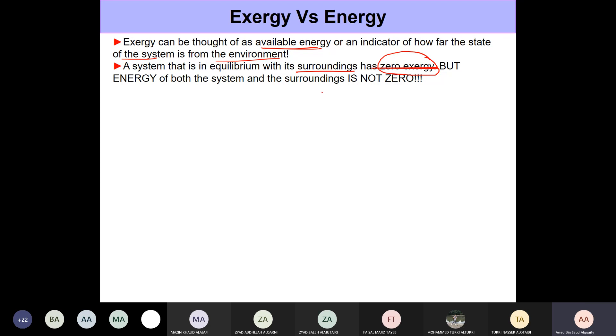When the system is at equilibrium with the surroundings, you call it the dead state and it has zero exergy. But it's important to remember that the energy of both the system and the surroundings at that dead state is not zero. It's only the exergy that is zero. And the exergy is zero because we cannot make use of it for any work.